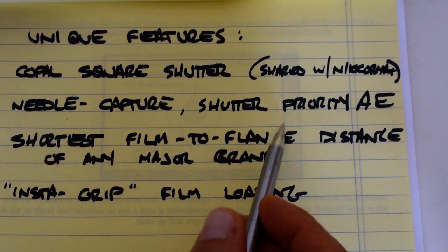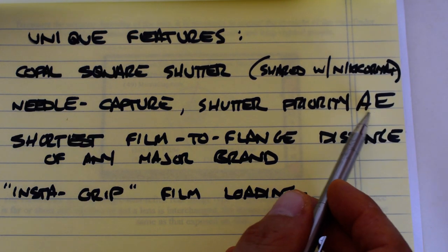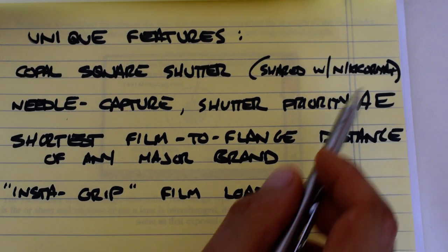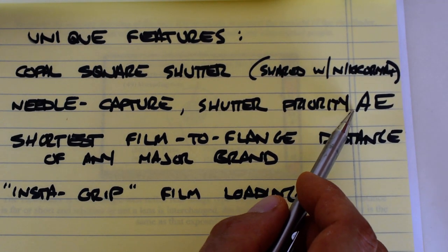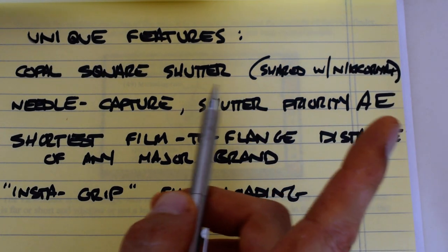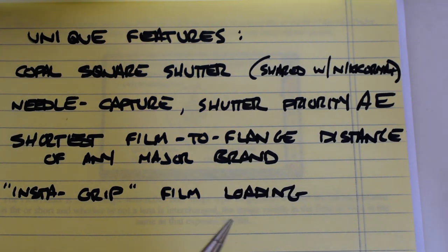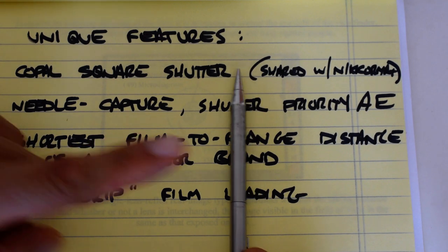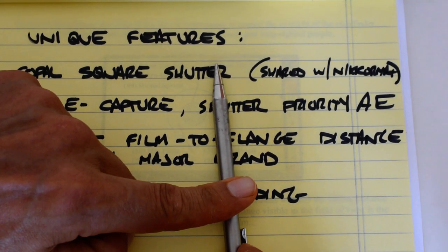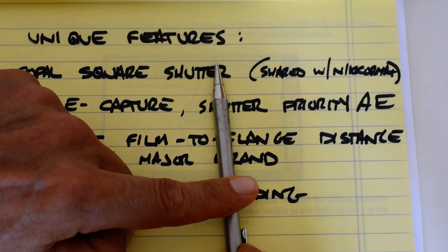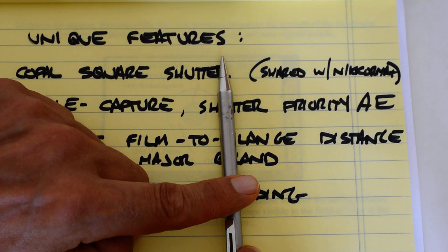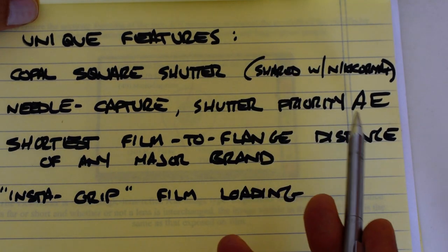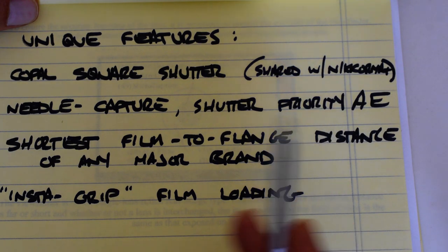Likewise, now this is completely unique to the Autoreflex: the needle capture shutter priority automatic exposure system. So the Autoreflex cameras feature a needle on the right-hand side of the viewfinder that moves up and down indicating the proper aperture. When you depress the shutter release button, a little metal arm physically grabs the needle, moving up and down, then some arm comes out, physically grabs the needle and holds it so that it now knows what the aperture is and communicates that information mechanically to the lens.